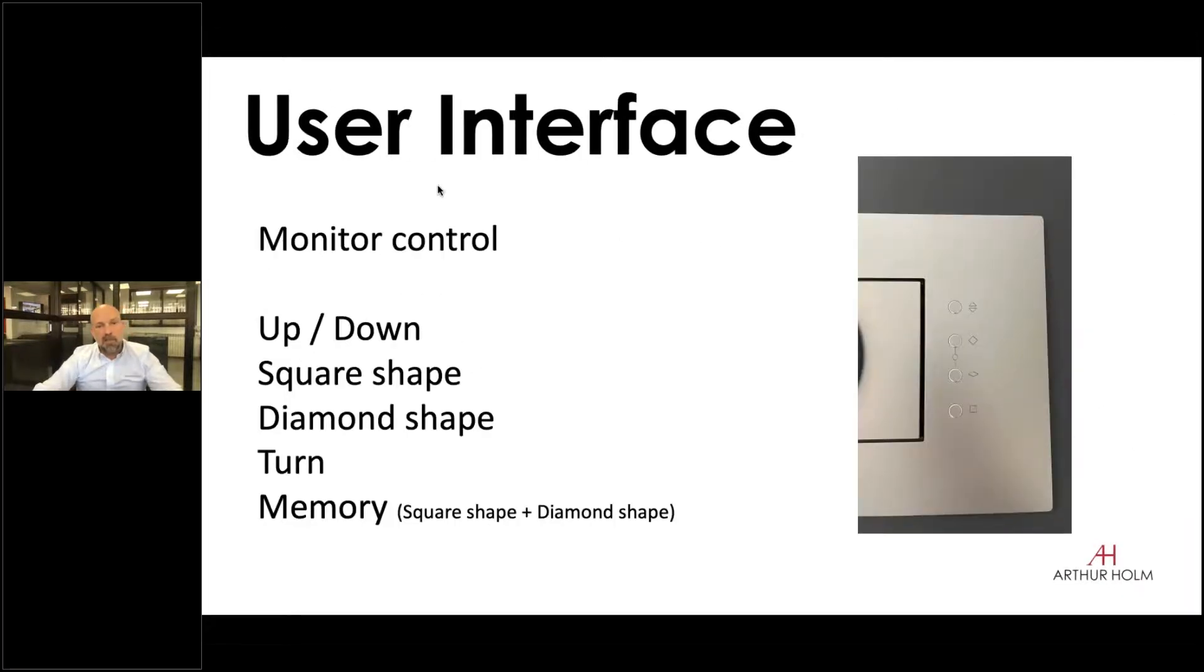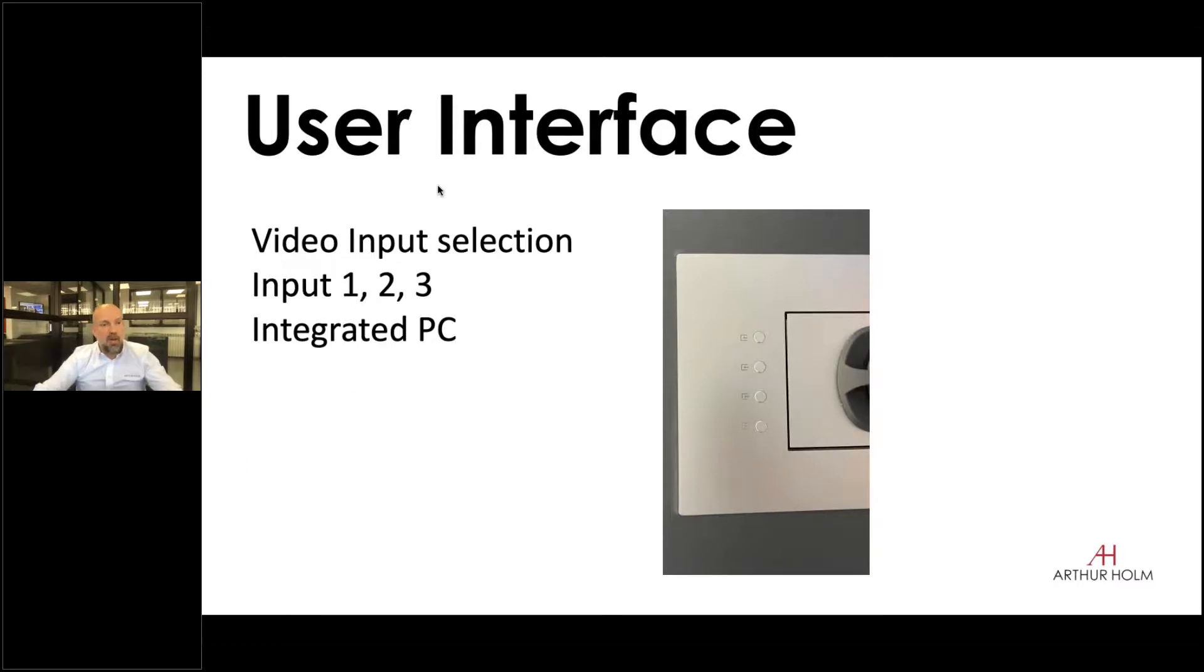On top beside of the speakers in both sides, we have the mechanical control of the unit. You can take it up and down, you can change the shape of it from a square to a diamond shape, you can turn it around, and you can memorize your favorite position as well as an option. These are the physical interface for the mechanical part. On the other side, you have input select. You have three different inputs, the two on top and the one below. The one below could also be connected via the small pop-up tower. It could be USB-C, USB, HDMI socket or DisplayPort. And then you can select the integrated PC.